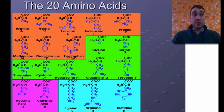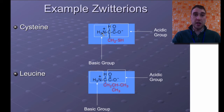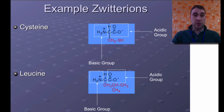If we look at the 20 amino acids that make up all the proteins in your body, you can see these are all drawn in their zwitterion form — the hydrogen has gone from the carboxyl group to the amine group. Here are some examples of those zwitterions. Here we've got the basic group from cysteine, the amino group, which has taken the hydrogen ion from the carboxyl group, giving it a positive charge, and then the carboxyl group has a negative charge. The same applies to leucine — the amine group here and the carboxyl group over there.